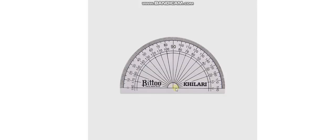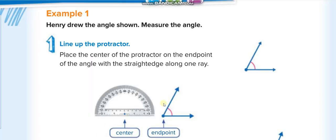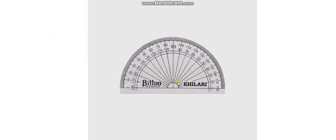The bottom line always aligns with the zero, even if it is tilted — wherever it is, we match this line with the baseline. Then we count from zero to find the actual angle. If we start from the right zero, we measure towards the left, and if the line goes the other direction, we start from the left zero and measure towards the right.